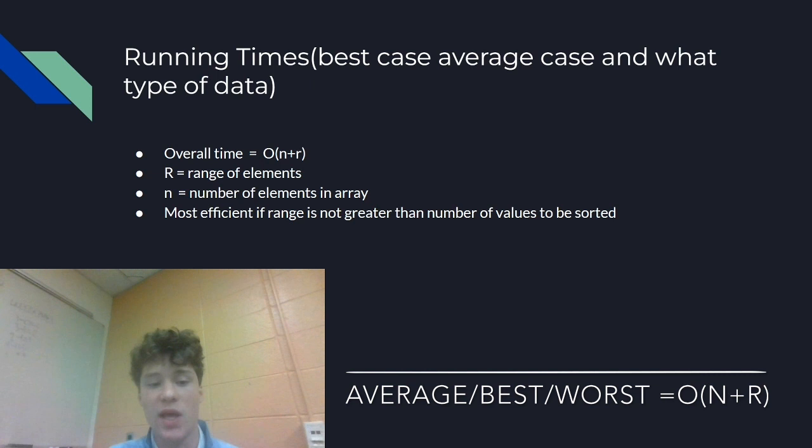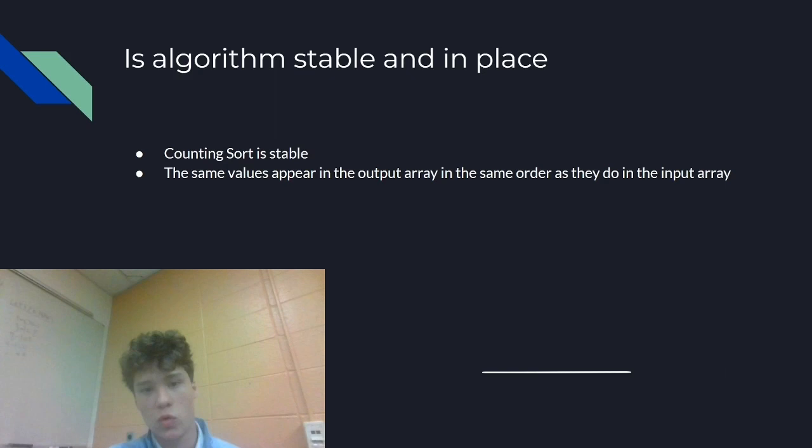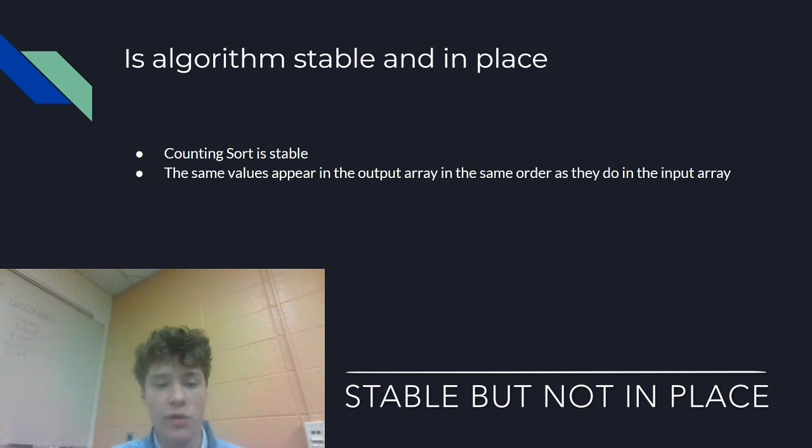It is most efficient if the range is not greater than the number of values to be sorted. You'll see a little bit more of this once I provide the example, but counting sort is stable, and the same values appear in the output array in the same order as they do in the input array, which is basically our definition for stable in this case.